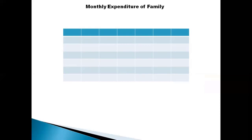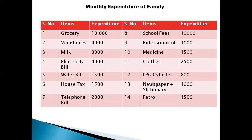Now we will talk about the monthly expenditures of the family. Expenditure items include medicine, clothes, LPG cylinders at Rs. 800, newspaper, stationery items, and petrol. There are approximately 14 different items listed in the expenditure table.